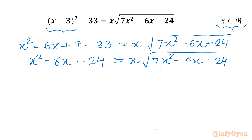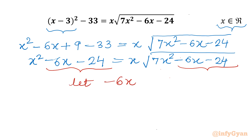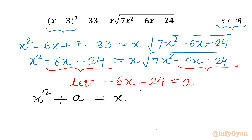Now we have minus 6x minus 24 on both sides. So let us consider a substitution. Let minus 6x minus 24 equal to a. I will write the equation in terms of x and a. So the left hand side becomes x squared plus a, and the right hand side will be x times square root of 7x squared plus a.